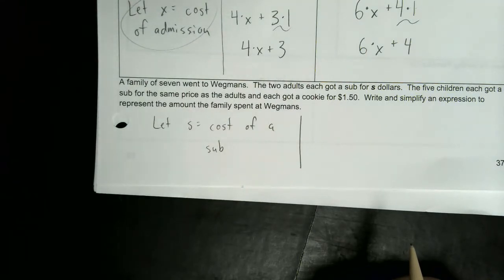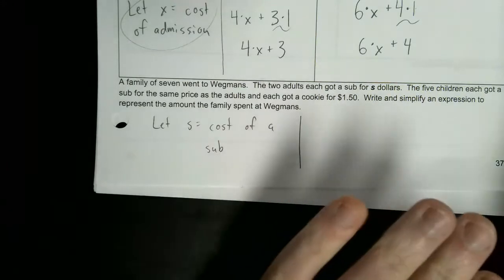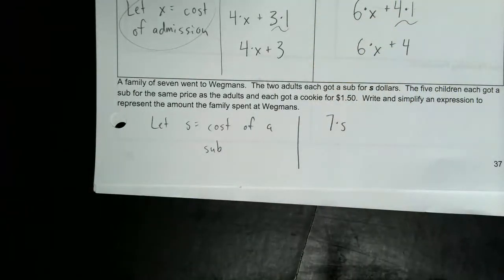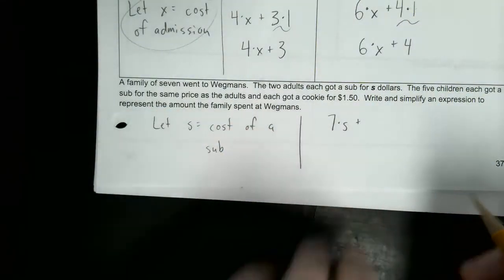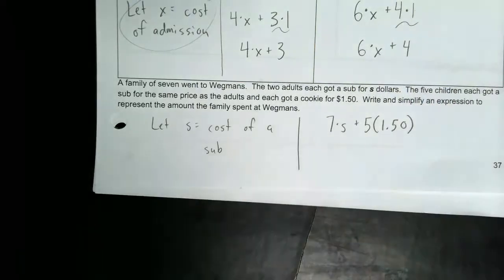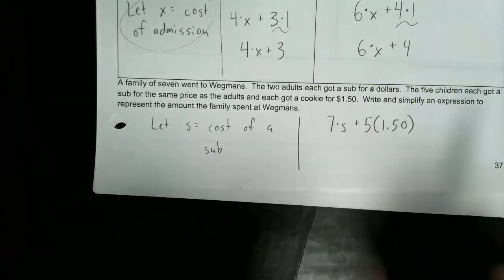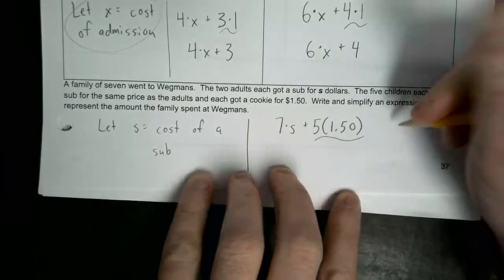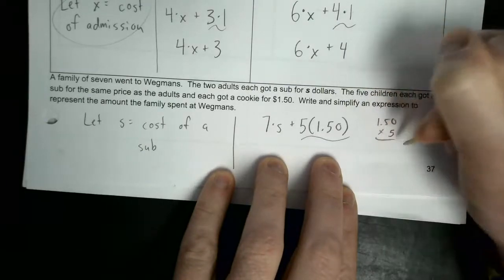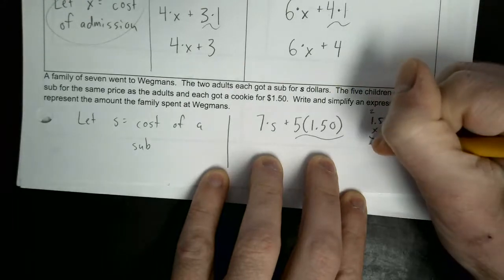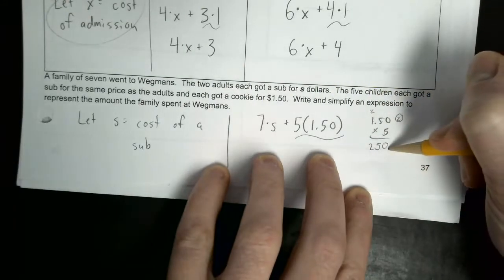We could do this in a couple of different ways, but one way is to think: how many people bought subs? Two adults and five children — all seven of them got a sub. So the cost of seven subs would be 7 times S. Plus, the five children each got a cookie for $1.50. Five times 1.50 — let's work that out: 5 times 150 gives us 750, and with two decimal places that's $7.50.